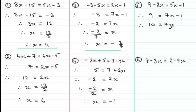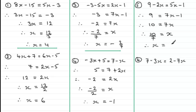I divide both sides by 7: 10 divided by 7 equals x. Writing x on the left, x = 10/7. Rather than using the calculator and getting a decimal to round, 7 goes into 10 once with 3 left over, so x = 1 and 3/7, which is the exact answer.